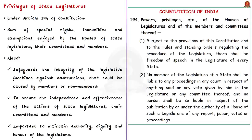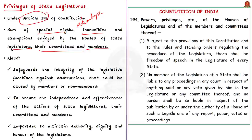Let us understand what privilege means. A privilege is a special right, advantage, or immunity granted only to a particular person or group. The Constitution provides certain privileges for the Parliament, state legislatures, and their members. The privileges of a state legislature are provided under Article 194. They refer to special rights, immunities, and exemptions enjoyed by the house, their committees, and their members.